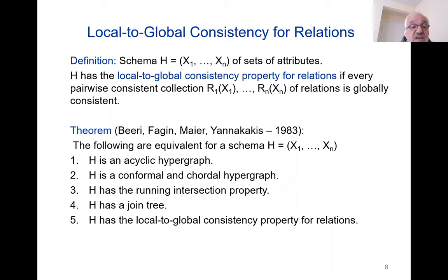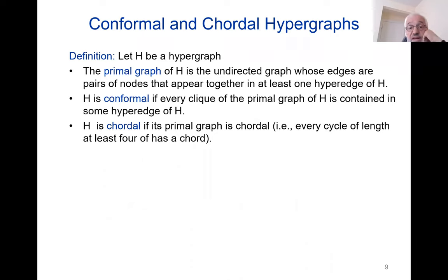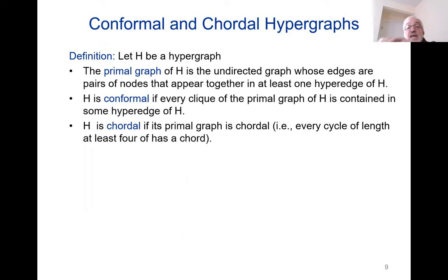I'm not going to define all of these properties — they are quite well known in the database theory and hypergraph communities. I will give a feeling for just two of them. First, conformal and chordal: suppose you have a hypergraph, a set of hyperedges. You associate with it a natural graph called the primal graph — the undirected graph whose edges are pairs of nodes that appear together in at least one hyperedge. We say the hypergraph is conformal if every clique — every complete subgraph — of the primal graph is contained in some hyperedge. And we say H is chordal if the primal graph is chordal, meaning every cycle of length at least four has a chord.